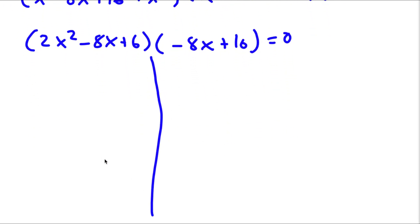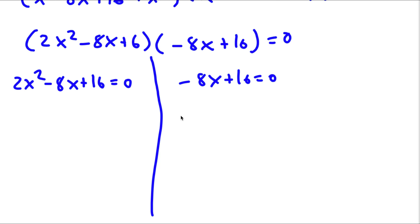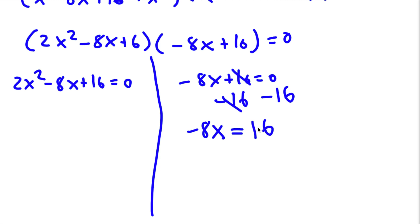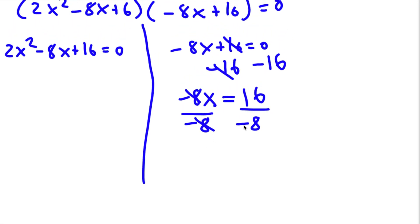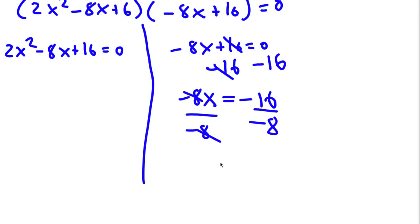This gives me two equations: 2x squared minus 8x plus 16 equals 0, and negative 8x plus 16 equals 0. For the second equation, I subtract 16 from both sides, leaving negative 8x equals negative 16. Dividing both sides by negative 8 gives x equals negative 16 divided by negative 8, which is positive 2. So x equals 2 is one solution.